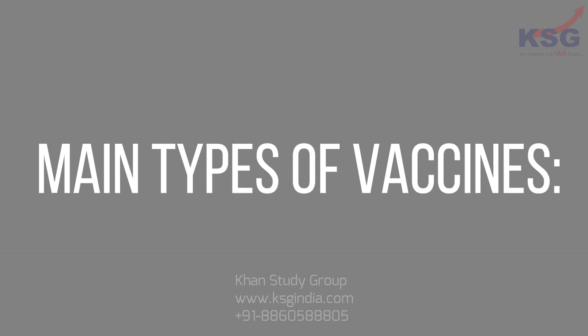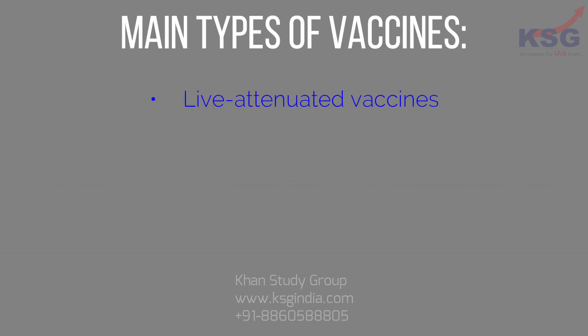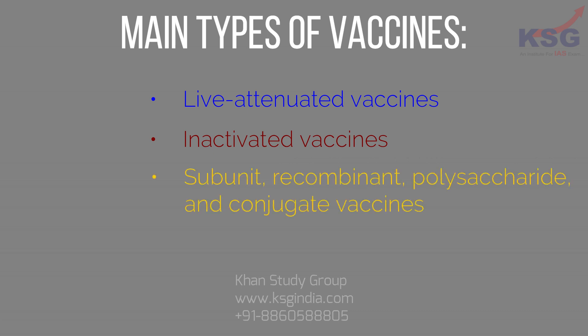There are four main types of vaccines: live attenuated vaccines, inactivated vaccines, subunit recombinant polysaccharide and conjugate vaccines, and toxoid vaccines.